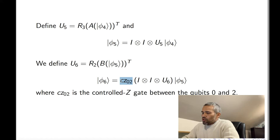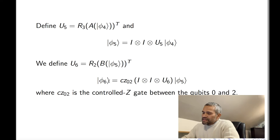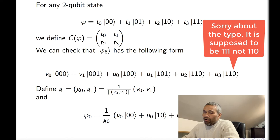R2 of B is a unitary matrix. The transpose is also unitary, and U6 is the transpose of R2 of B. Then we define the new state as the previous one times this local gate times control-C(0,2). Here we are at this stage in the circuit — this is the control-C(0,2). We can check that this new state is given by only six complex numbers: V0, V1, U0, U1, U2, U3.